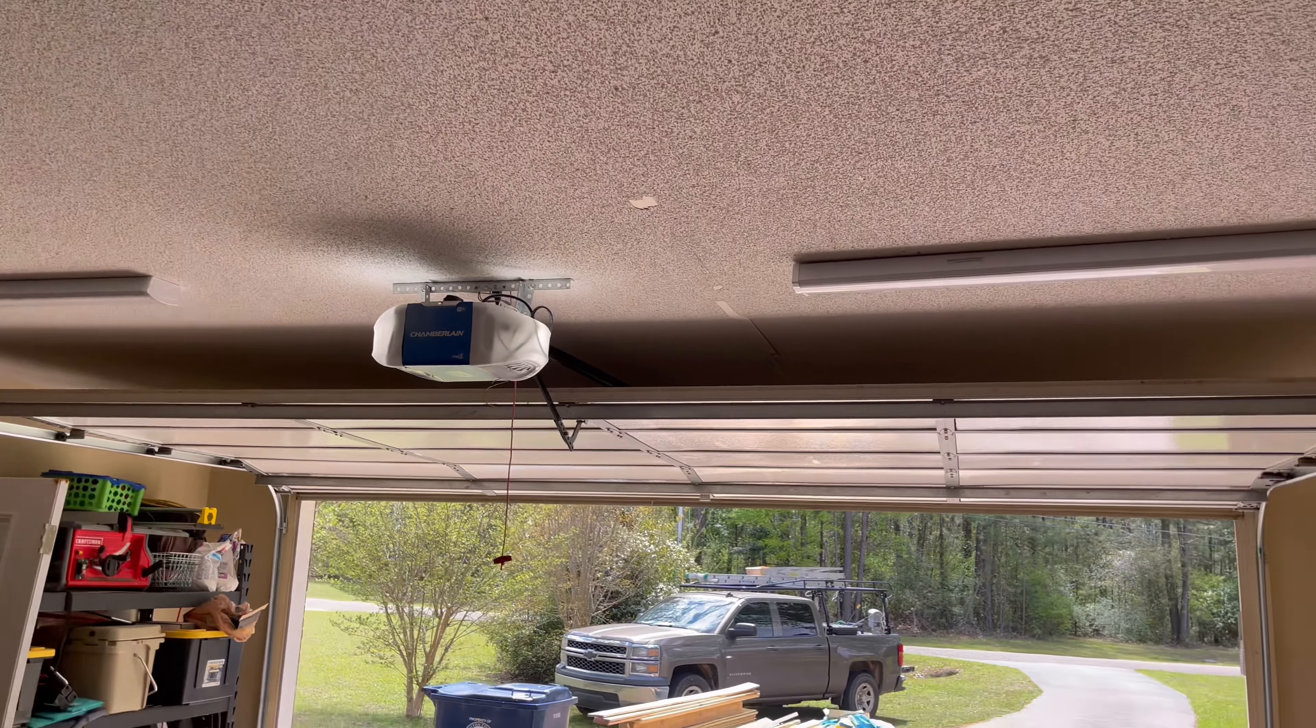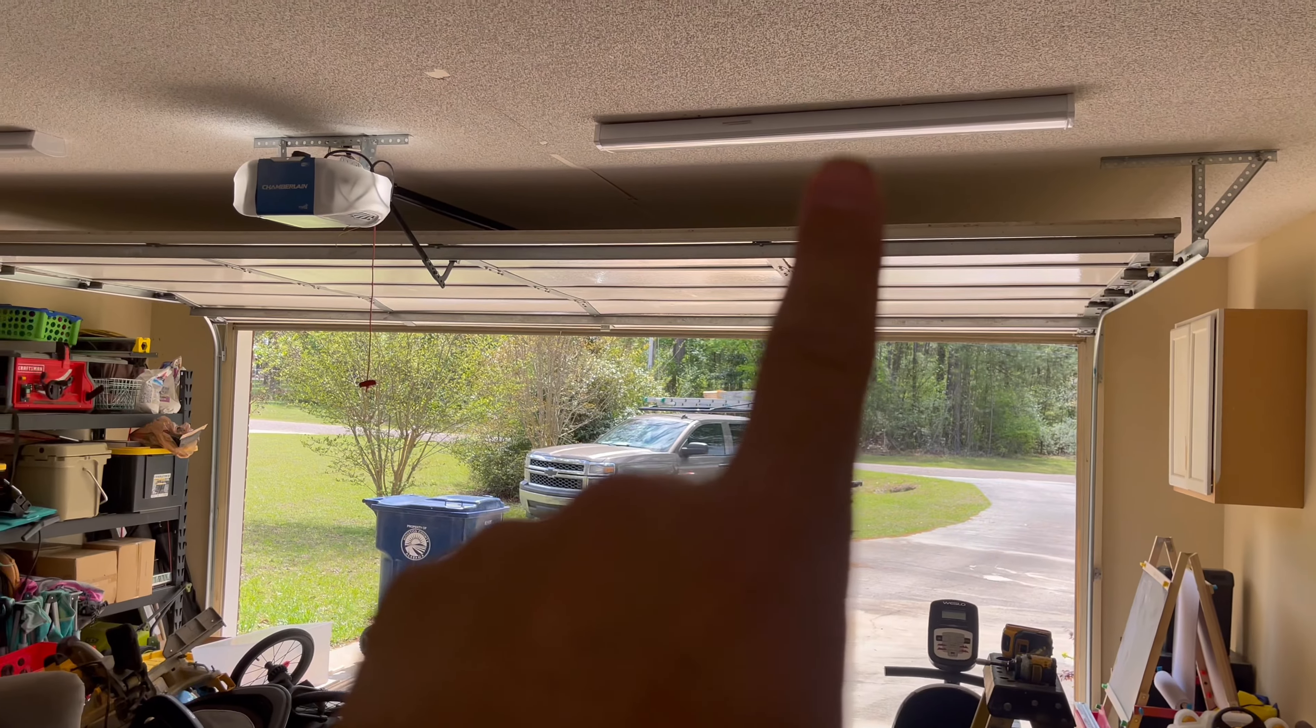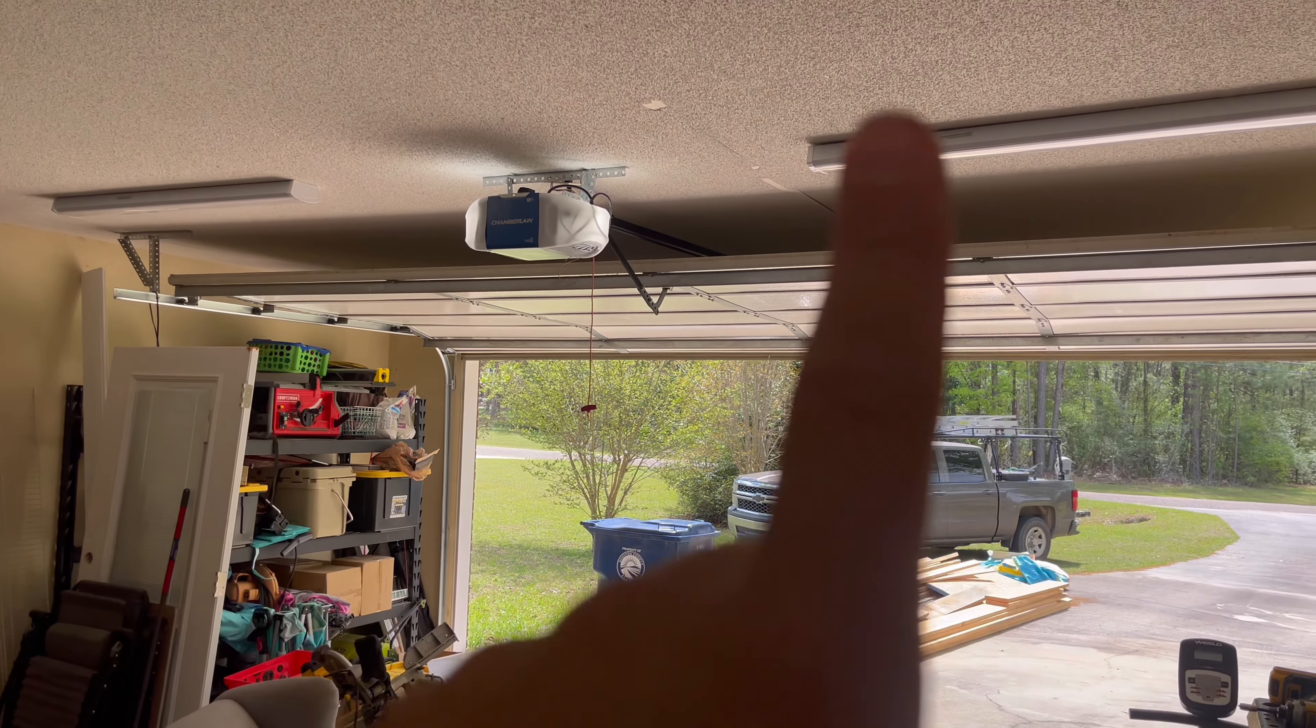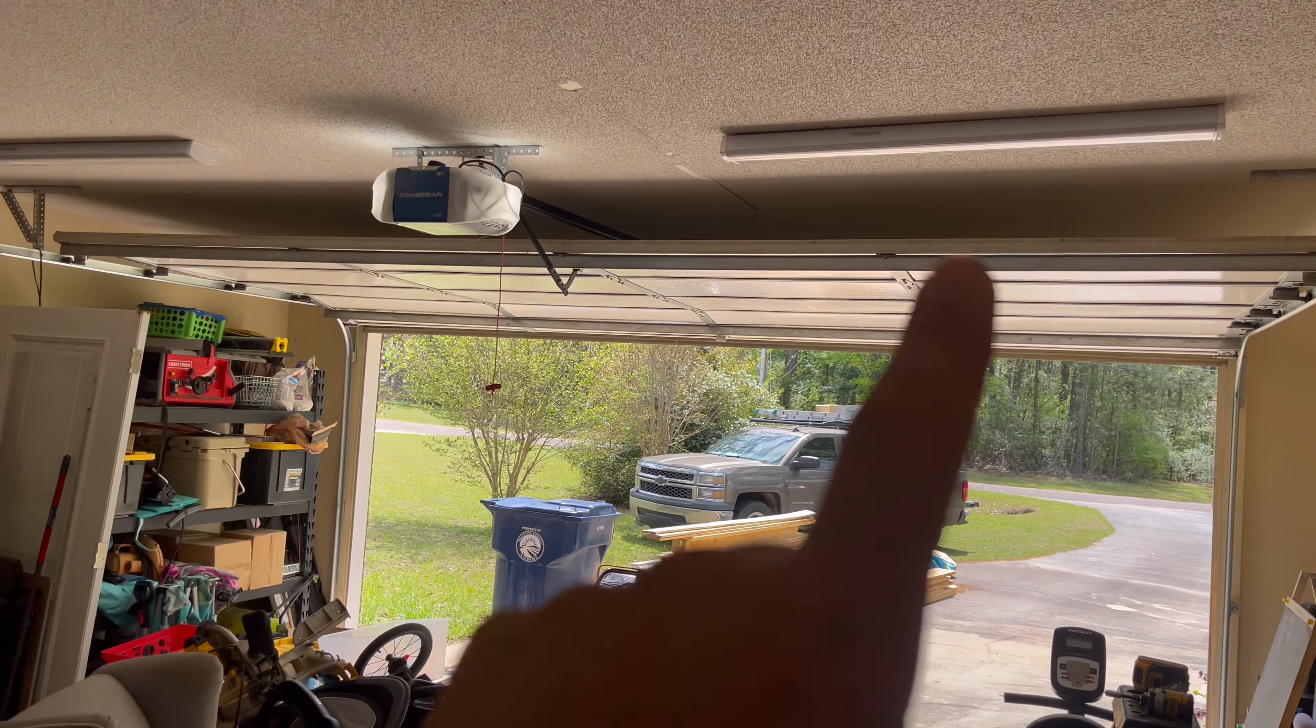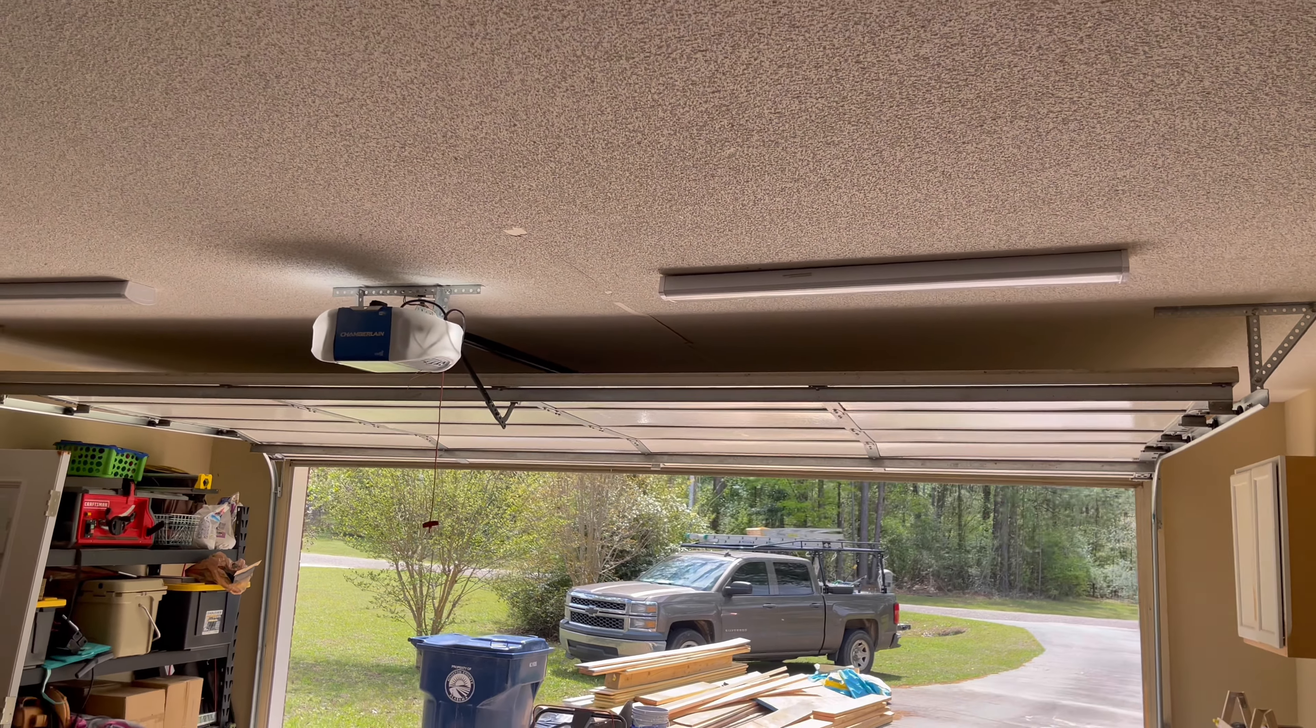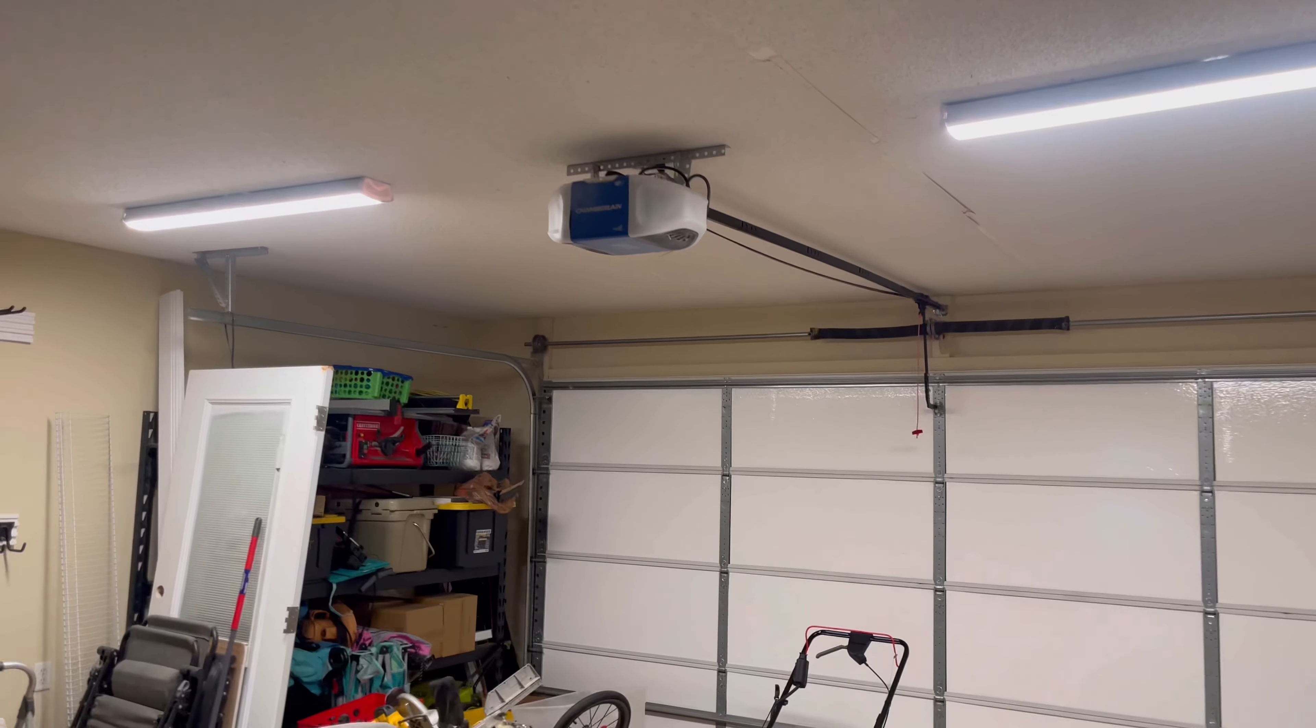Alright, so I just finished this up. I got both the new lights in and come to find out, man, the stinking junction box for this one, they're not even lined up. One of them is on this side of the stud and this one is on the other. So they don't line up perfect. That will be another project when I get all this drywall repaired maybe. It's kind of aggravating. Let's go ahead and close this garage door. Those things are a lot brighter.